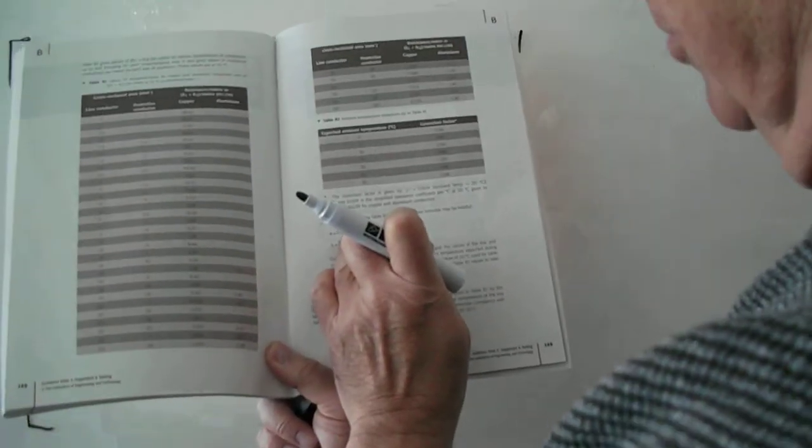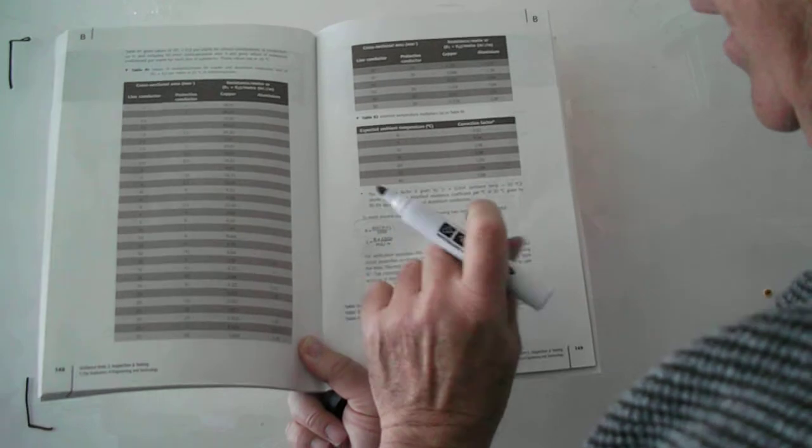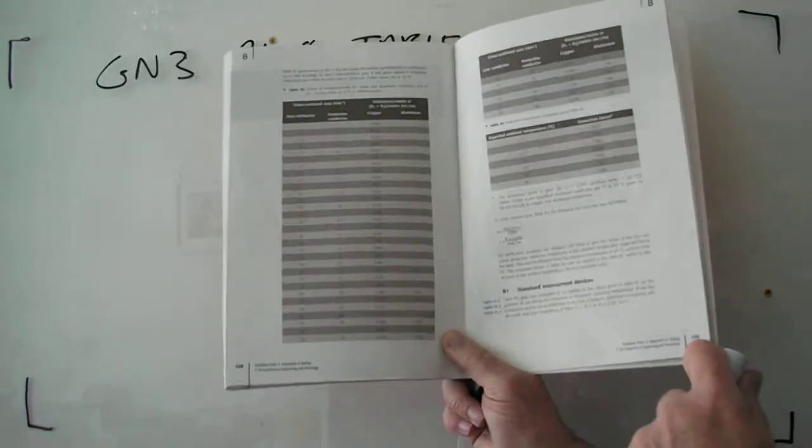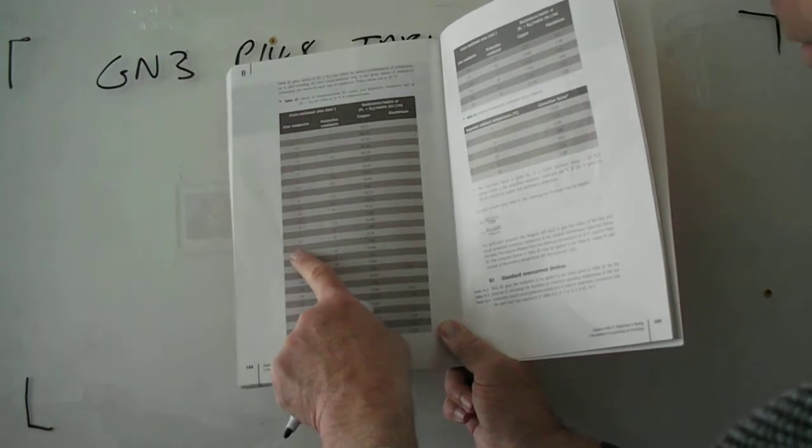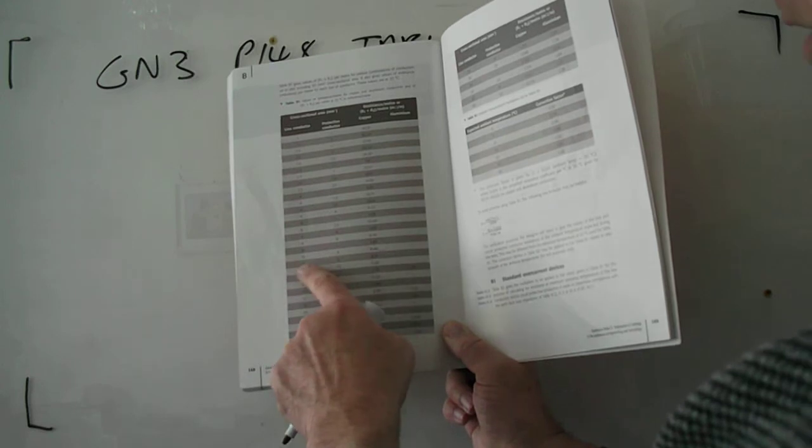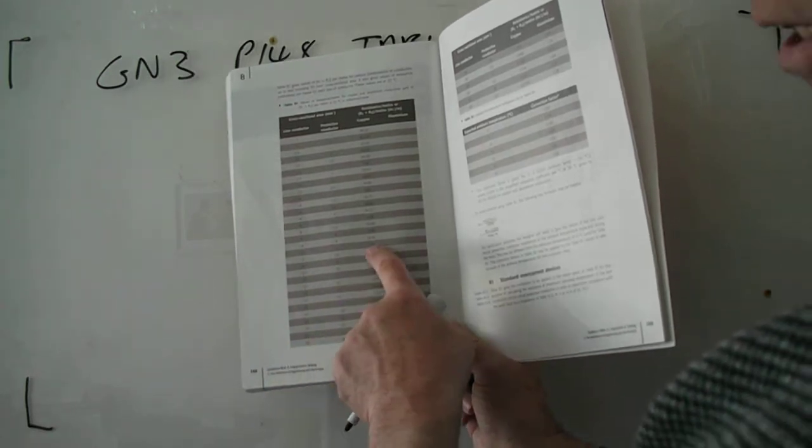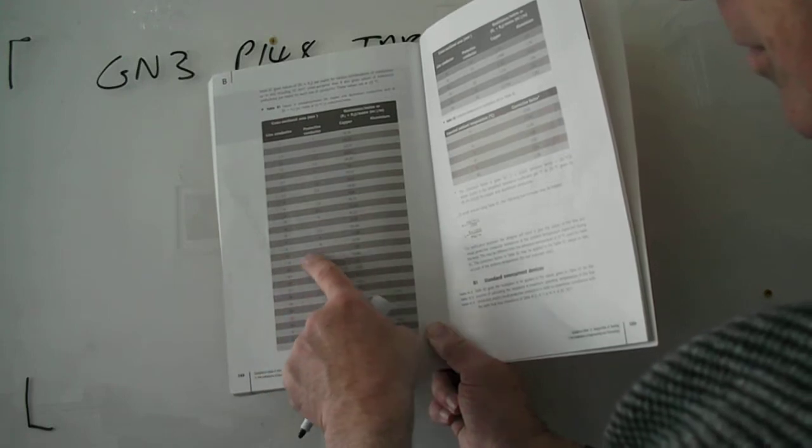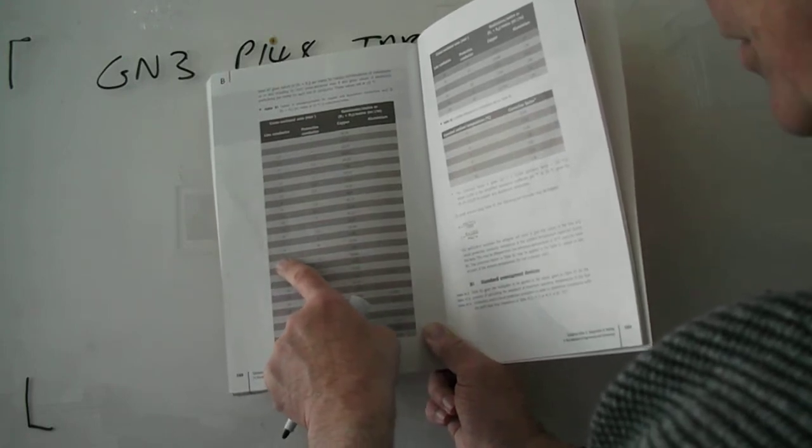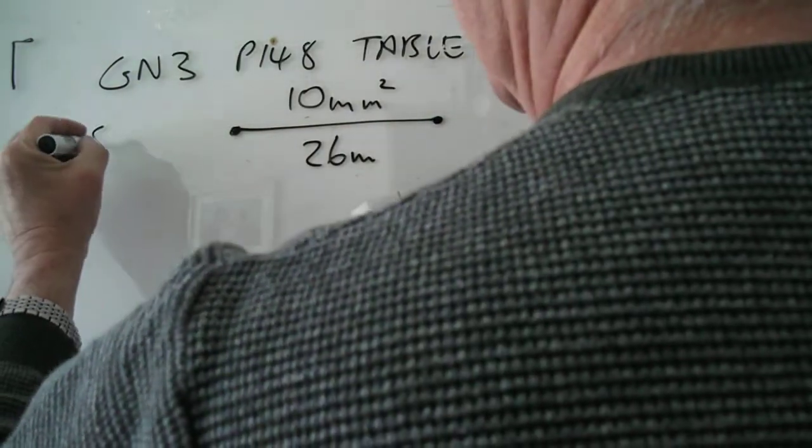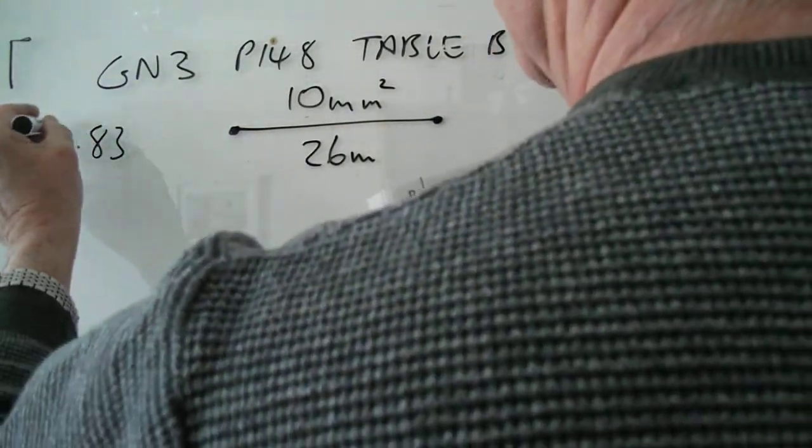Now if you look down to 10 mil single core cable, it actually says the line conductor there but it doesn't really matter for this calculation. It's 1.83 for a single core 10 mil cable. So just make a note of that - 1.83 is from the table.